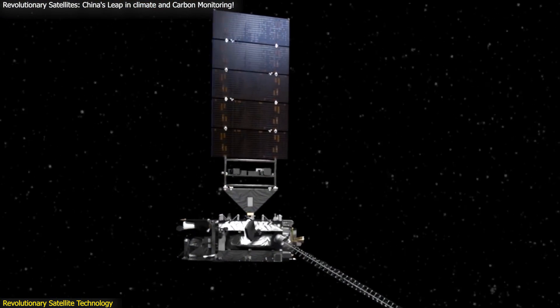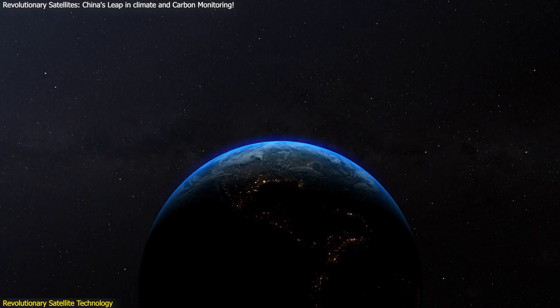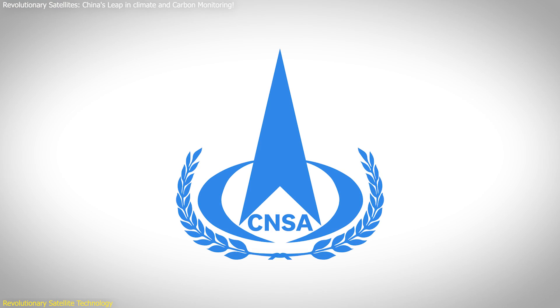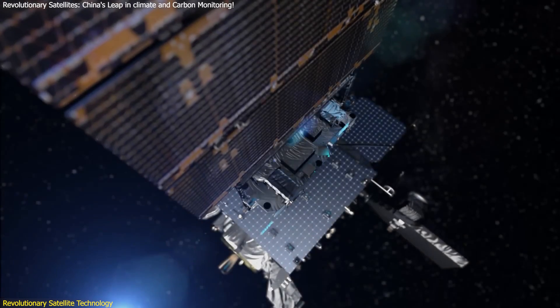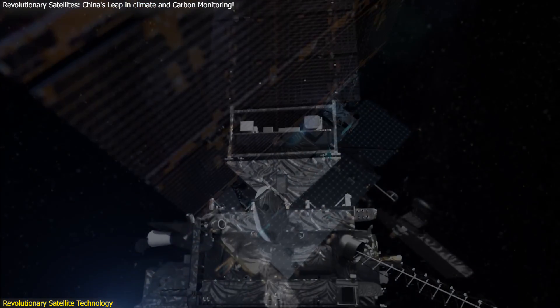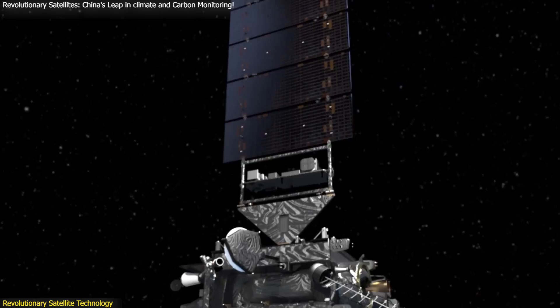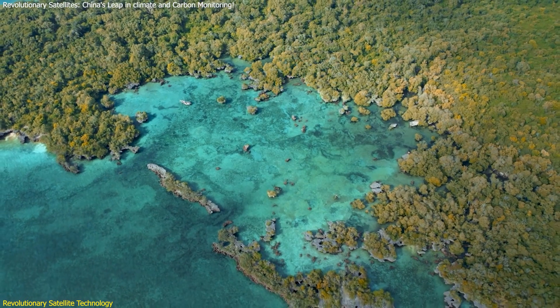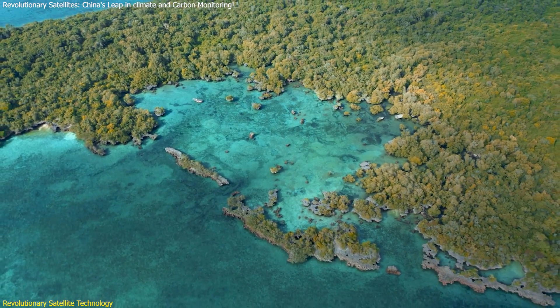The Atmospheric Environment Monitoring Satellite utilizes cutting-edge technology for comprehensive observation. According to the China National Space Administration CNSA, this satellite is the world's first to employ active laser detection alongside hyperspectral, multispectral, and high-precision polarization techniques. This combination allows the satellite to monitor a vast range of atmospheric elements continuously and dynamically.